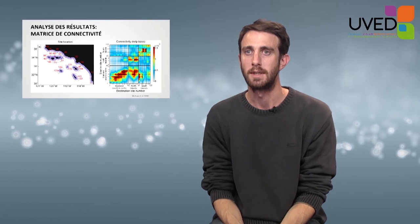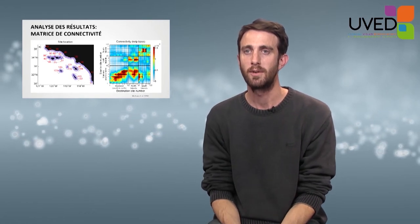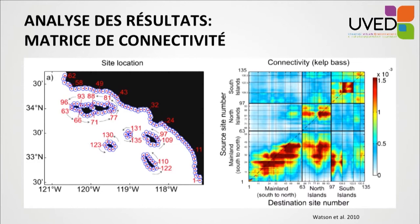As scientists, we analyze the results and find the relationship between the starting point and the landing point. For this, we use so-called connectivity matrices — the connection between sources (reproduction areas) and destination wells that will be colonized by the larvae.